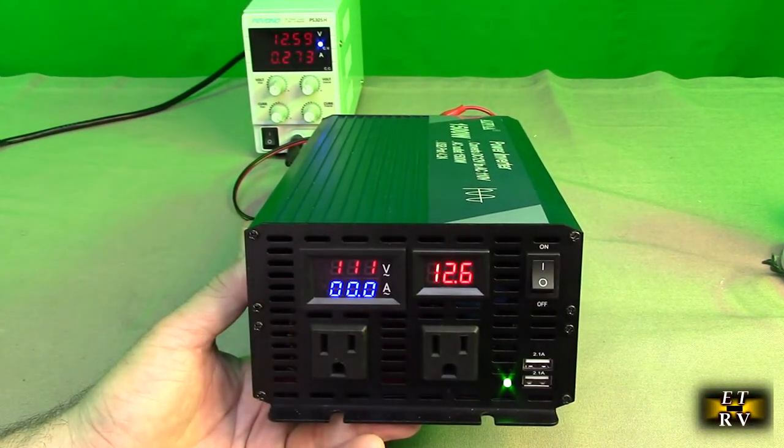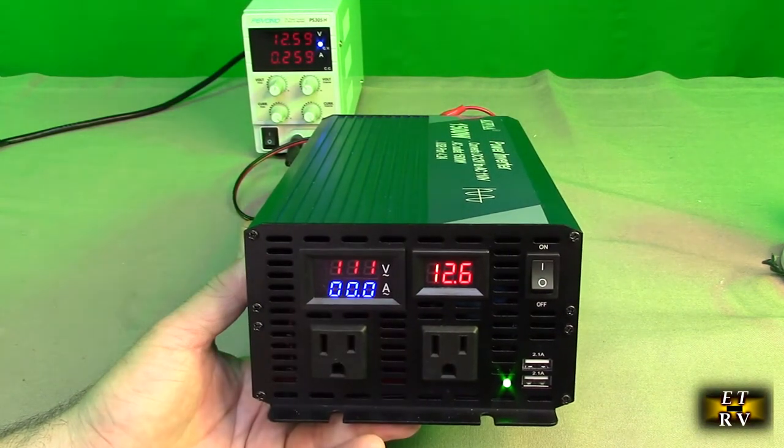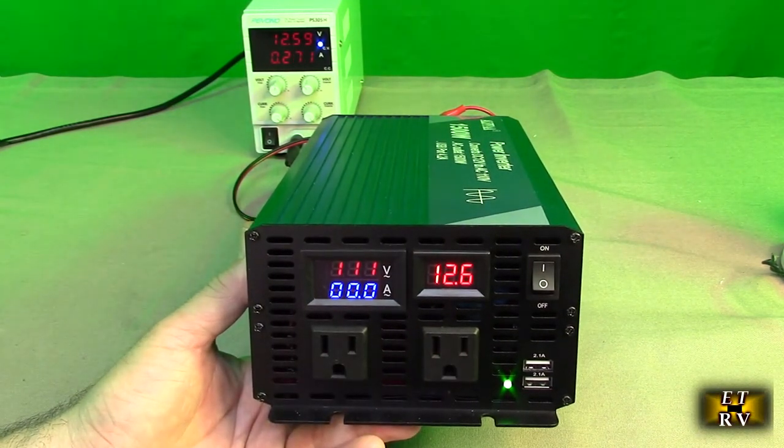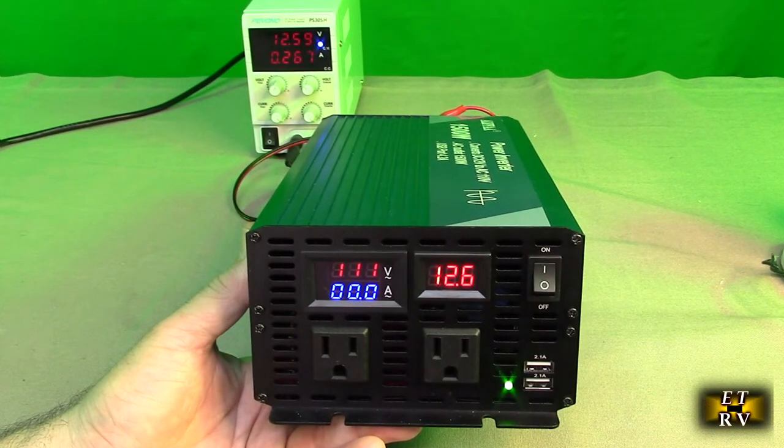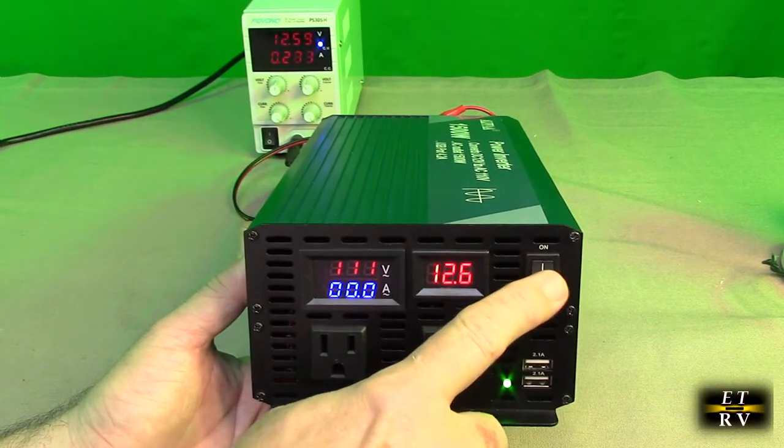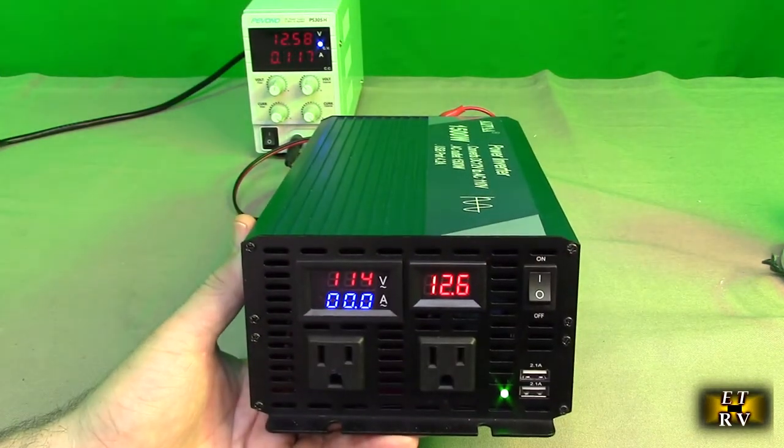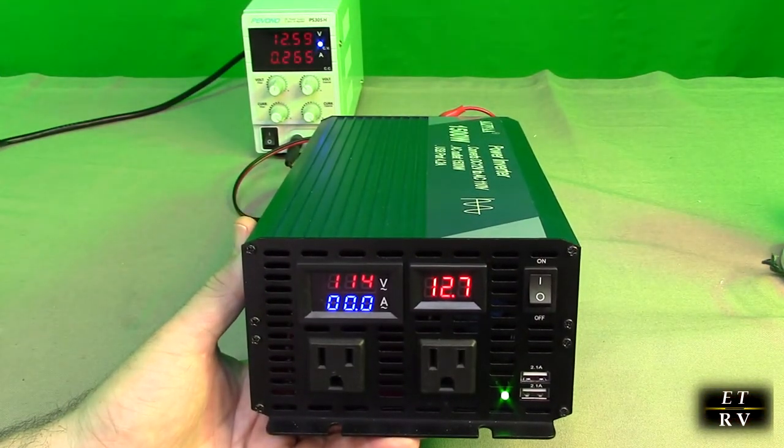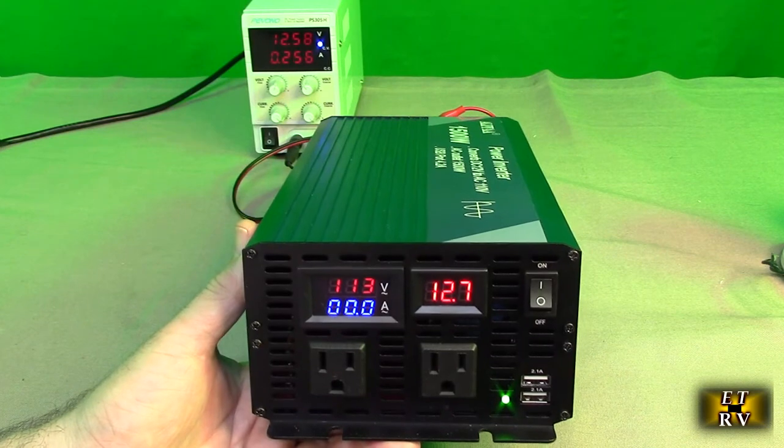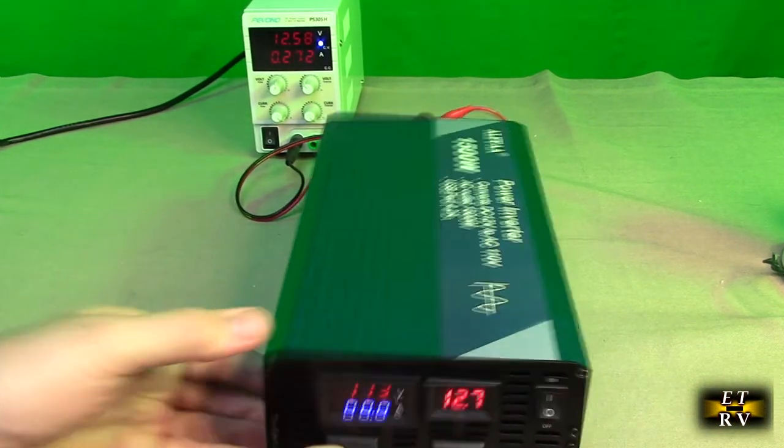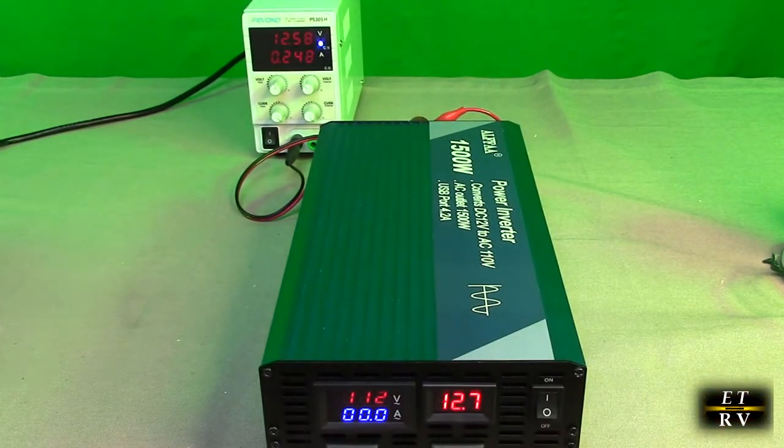There's no load, there's no current right there. There's the two grounded AC 110 volt ports on there and there's your power switch. You can just turn it on and off just like that. It comes back on.